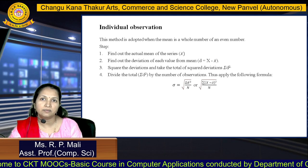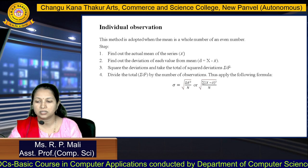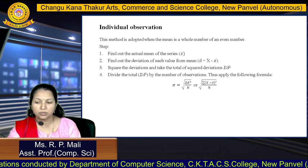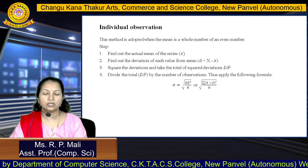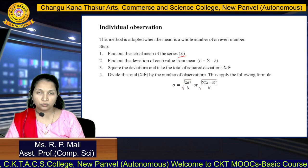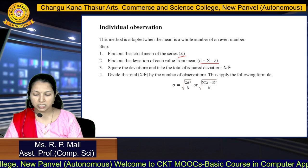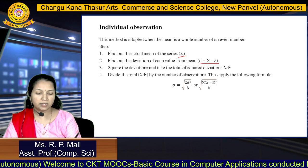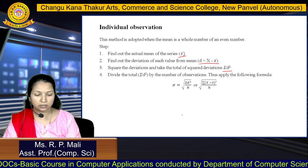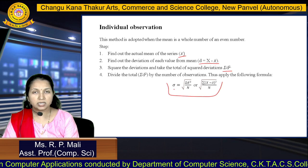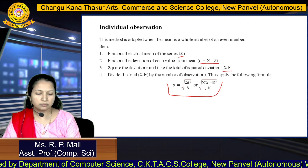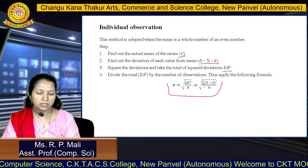We are going to find the standard deviation for individual series, discrete series, and continuous series. This method is adopted when the mean is a whole number or even number. The steps for individual observation are: find the actual mean X-bar, find the deviation of each value from the mean (D = X minus X-bar), square the deviation and find the summation of D-square, then compute sigma equals root of summation D-square divided by N, or equivalently root of summation (X minus X-bar) squared divided by N.